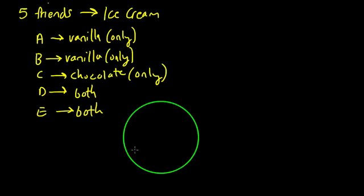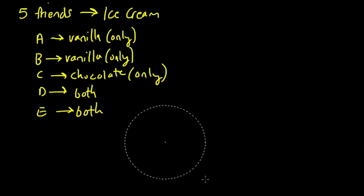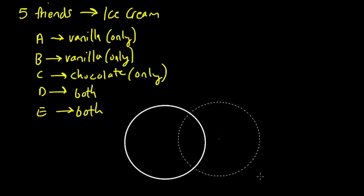Let's have the green. Well, you know what? Let's use a white color for vanilla. So this circle is people who want vanilla only, and then let's use a chocolate color here. So here is for people who want chocolate only, notice there's an intersection in the middle there.